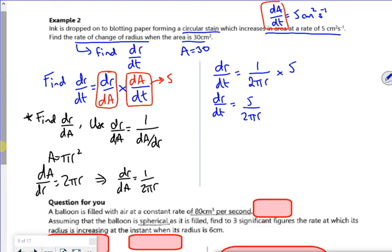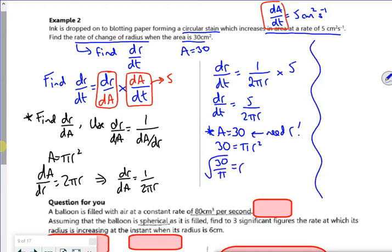Now here's my slight issue. It's when the area is 30. But I need r. So I know that 30 is πr². So 30 over π, all square rooted, is an r value. And it's that r value that I'm going to use.